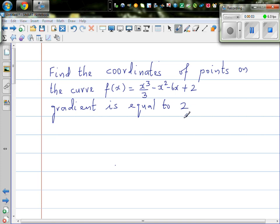Find the coordinates of the points on the curve f of x is equal to x cubed over 3, minus x squared minus 6x plus 2, where the gradient is equal to 2.